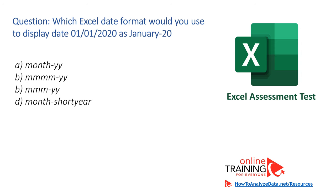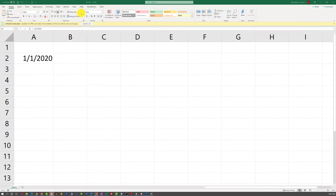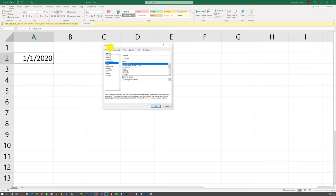Let's look at the question: which Excel date format would you use to display January 1st, 2020 as January-20? There are four choices: Month-YY, MMMM-YY, MMM-YY, and Month-ShortYear. Answering correctly requires knowledge of custom Excel date formats, located under the Home tab in the Number section. If you click the expansion button on the Number section, you see different choices, but this format isn't in the default list, so you need to go to the Custom Format section.